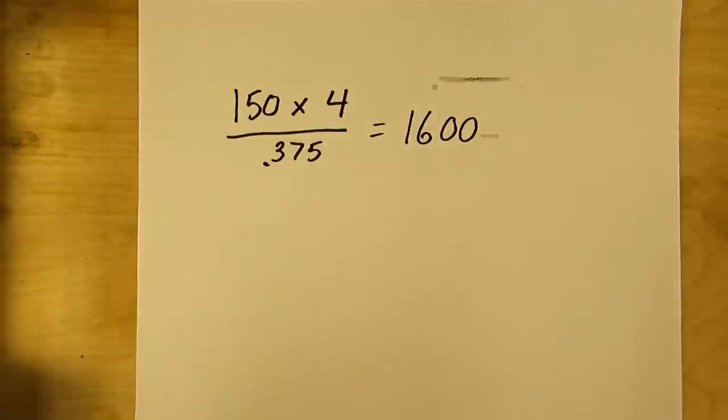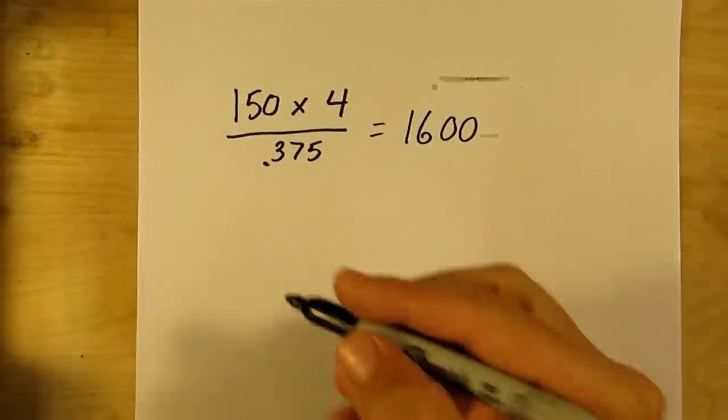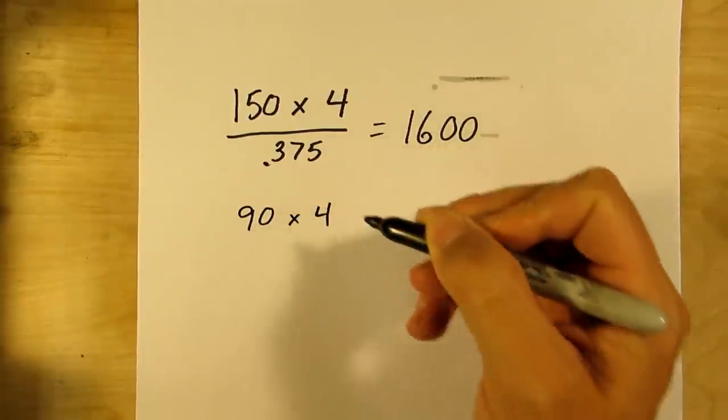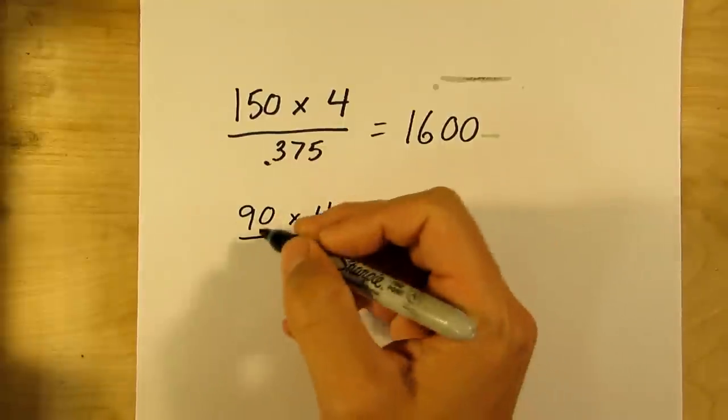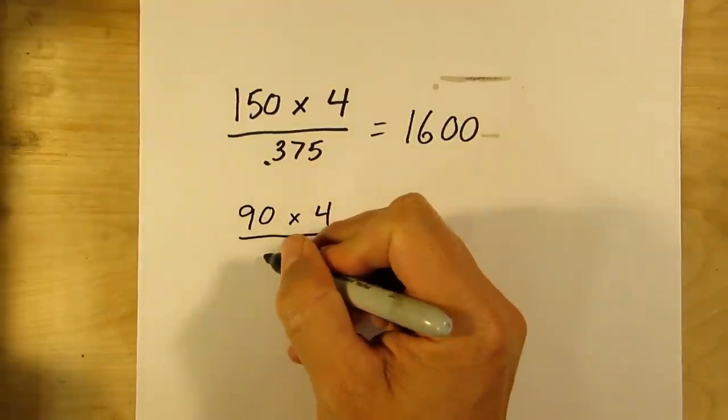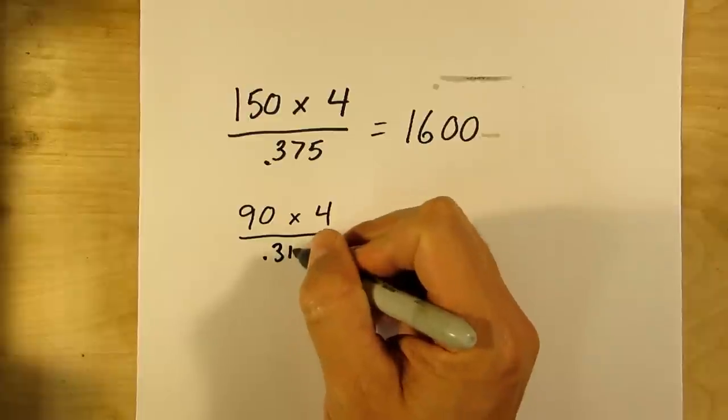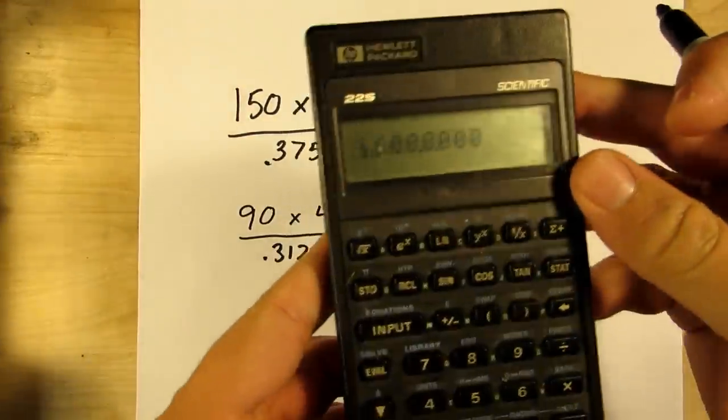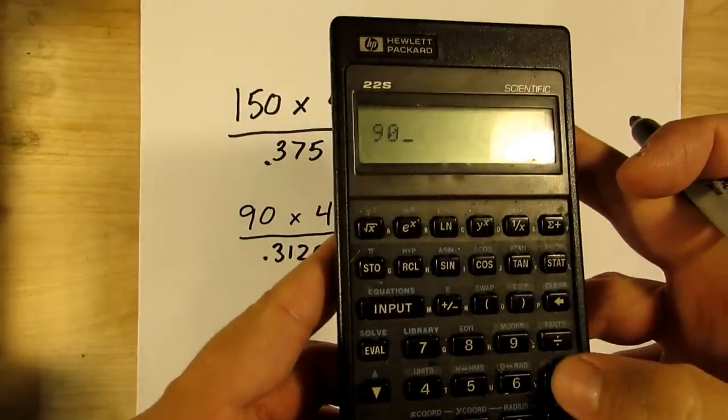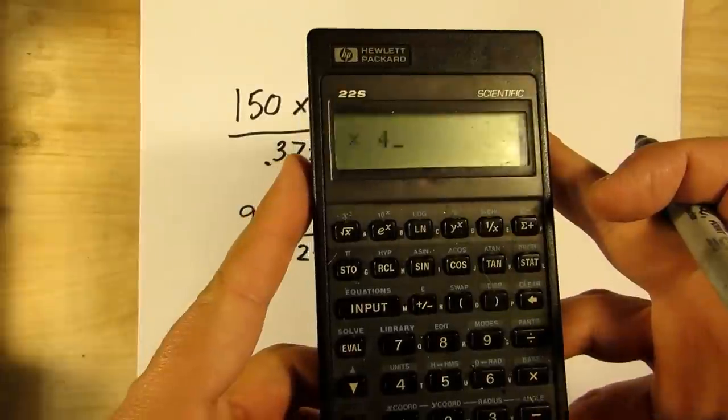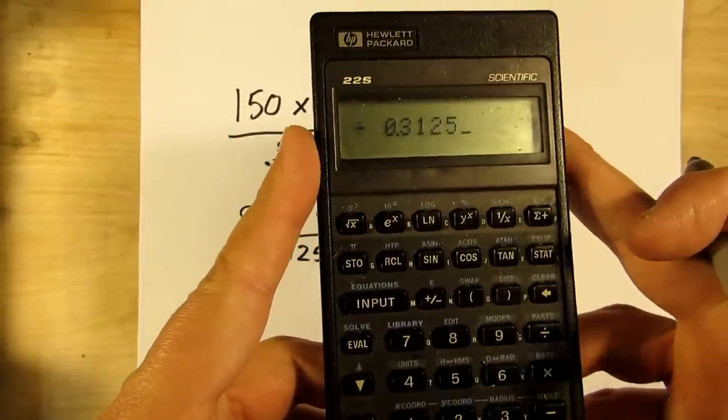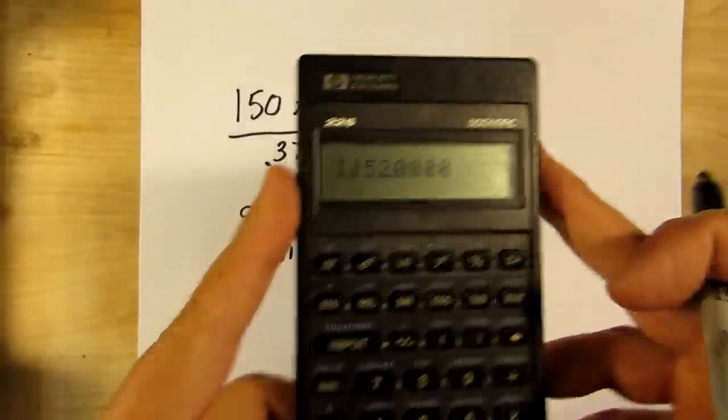So how about if we're turning a piece of mild steel in the lathe and it's 5/16 in diameter. So mild steel's SFM is 90 times 4 divided by 5/16, which is 0.3125. So if we do that on our calculator, 90 times 4 equals 360, divided by 0.3125, and we get 1152 rpm.